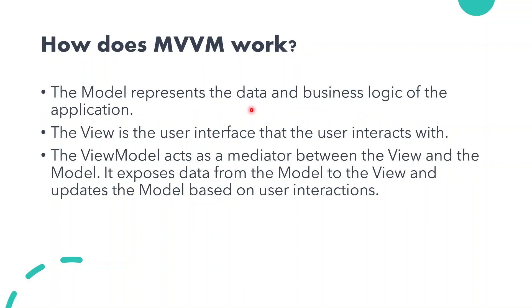How does MVVM work? The Model represents the data and the business logic of the application. The Model is essentially the class we define to hold data and business logic. The View is the user interface — the first screen the user sees on the mobile application. Through the View, the user can interact with the application.